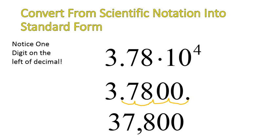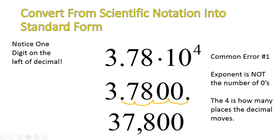Notice, from the original number 3.78, the decimal moves 1, 2, 3, 4 places — it is not the number of zeros. The most common mistake is that people just throw in 4 zeros, but it's not adding 4 zeros, it's moving the decimal 4 places. That's an important note.